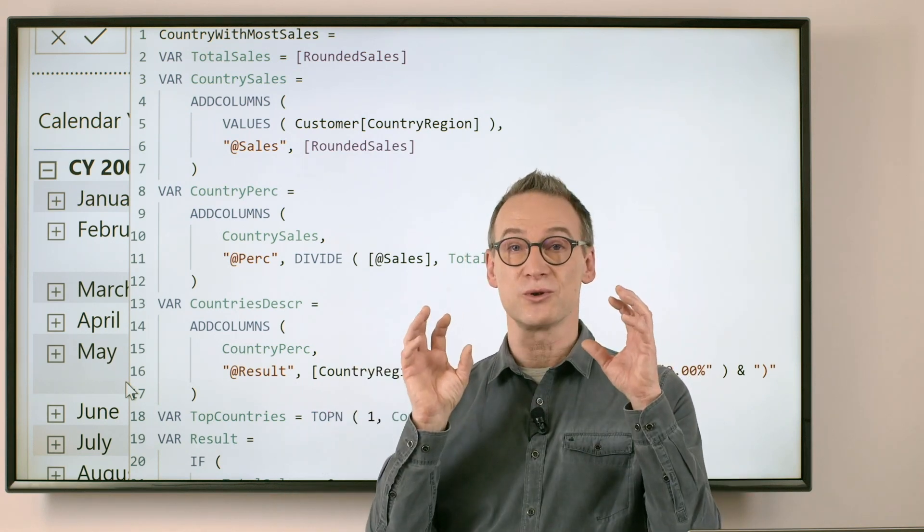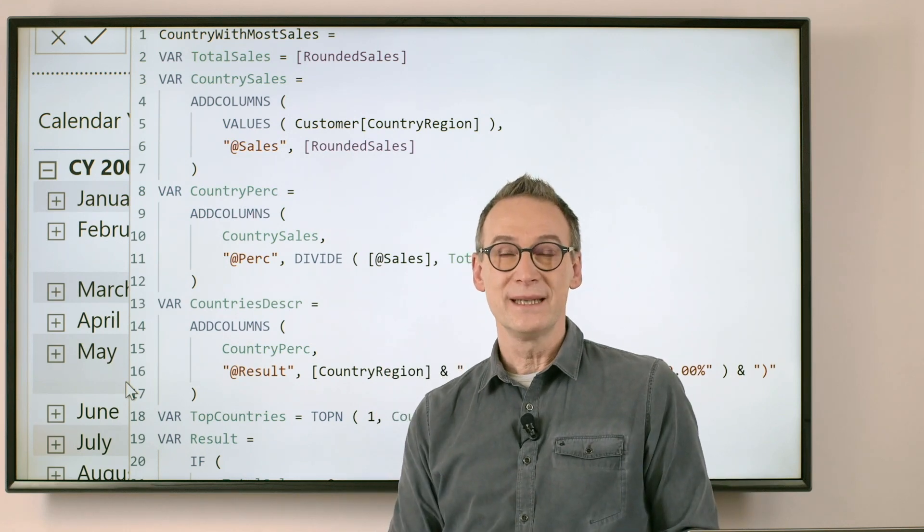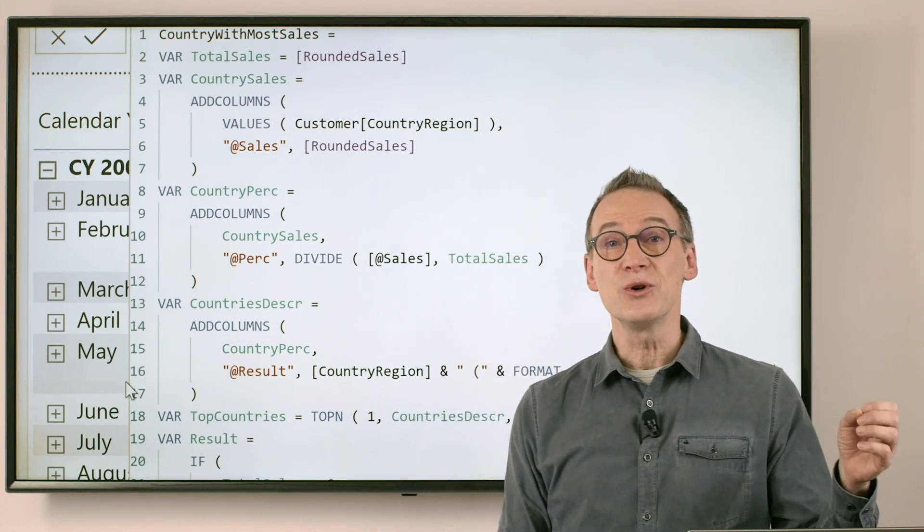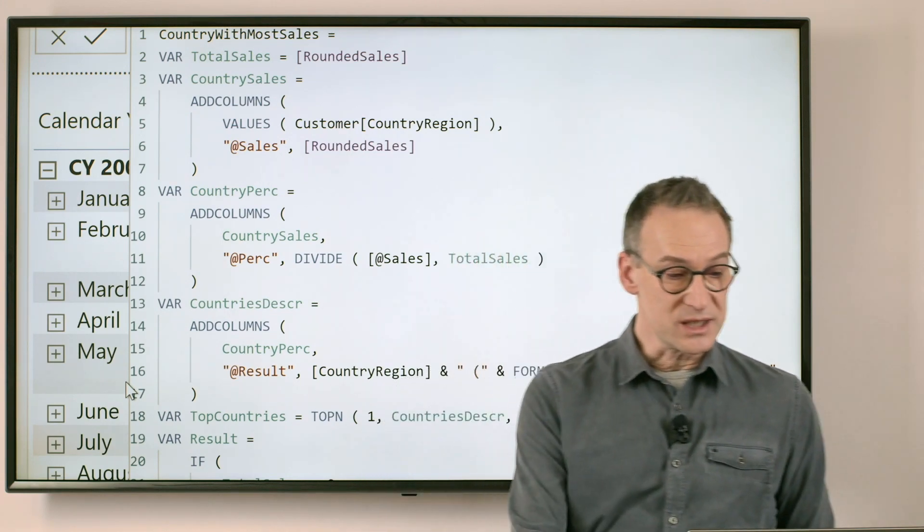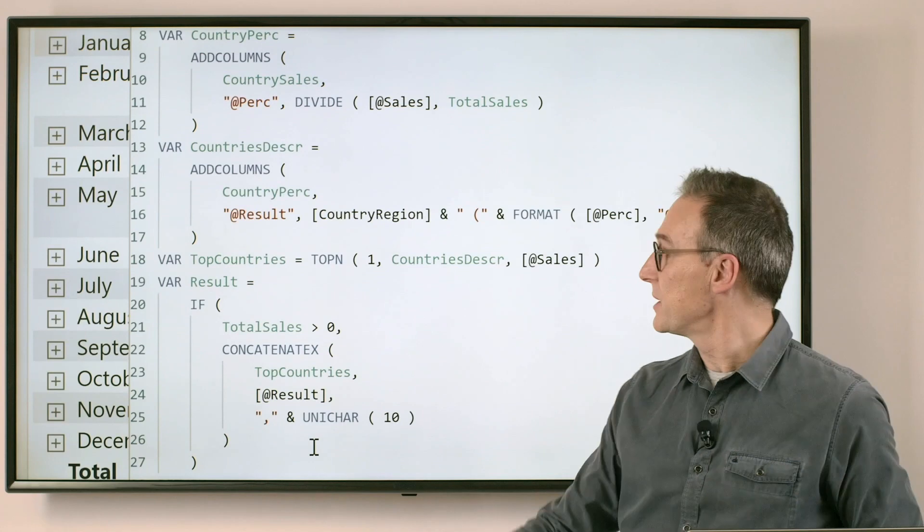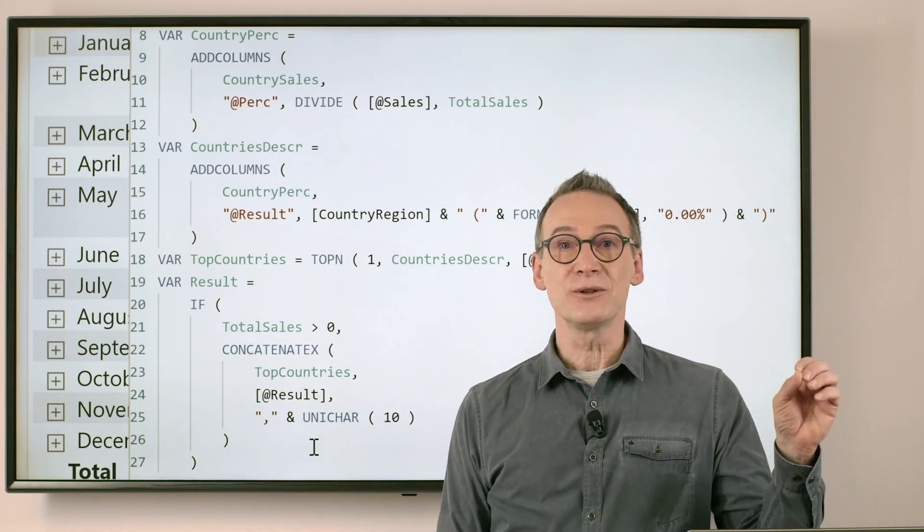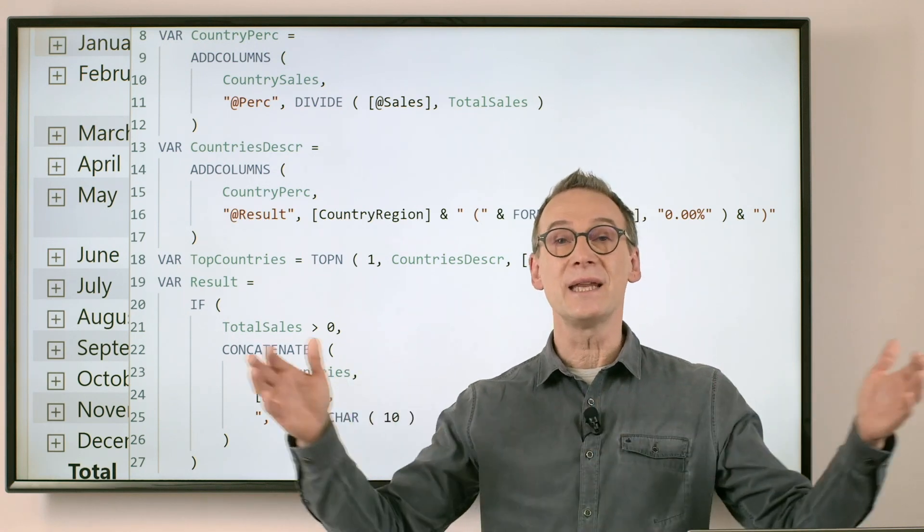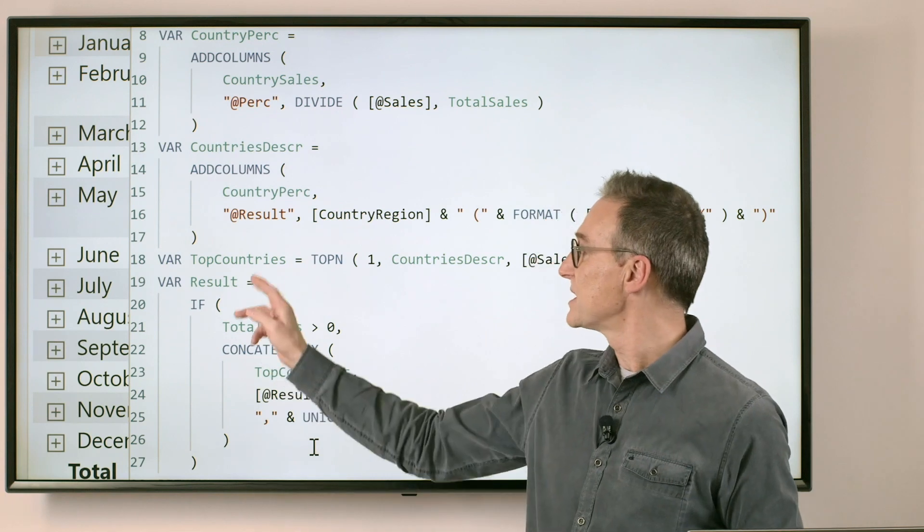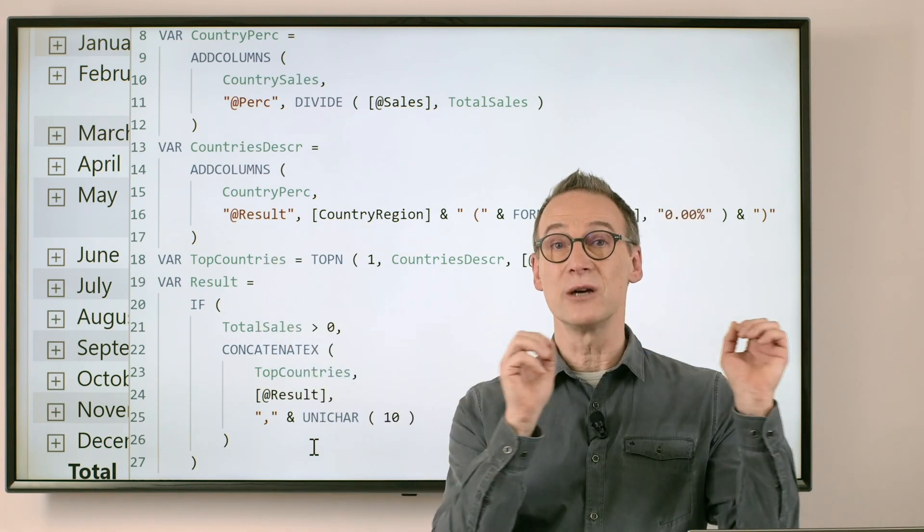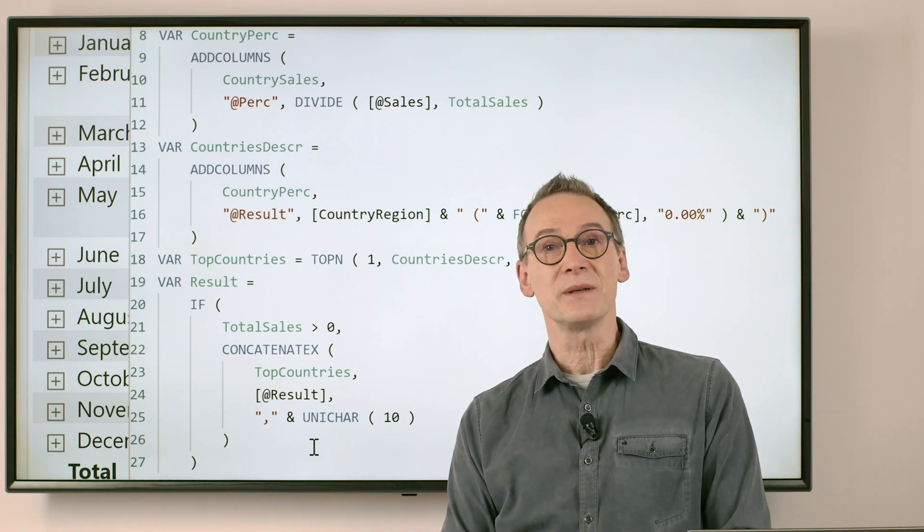we just need to extract the first row from this table and use it to return as a result. The thing is, we are never sure that there will be only one winner. Because of ties, topN, which is the function we are using here in top countries, might return multiple rows. So we cannot just isolate a column and return it. It might not work. That is when concatenate text becomes useful.